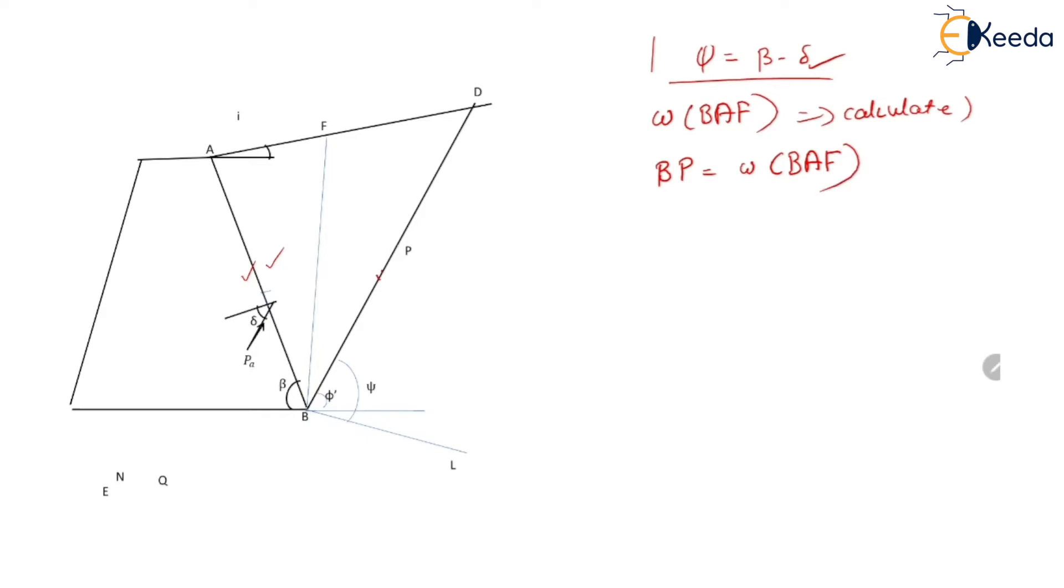Now from this point P a parallel line to BL is drawn. So this parallel line intersect the failure surface at point Q. So this length of PQ represents the magnitude of active earth pressure which is required to maintain this failure wedge BAF in equilibrium. So PQ is equal to pa for wedge BAF.